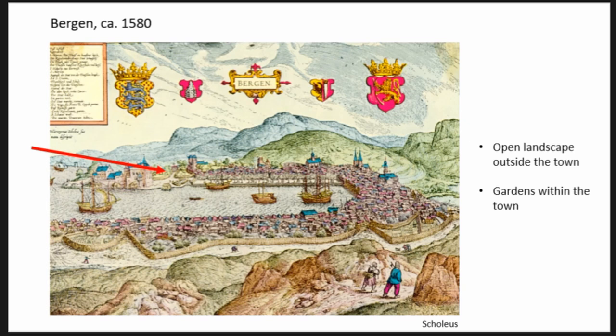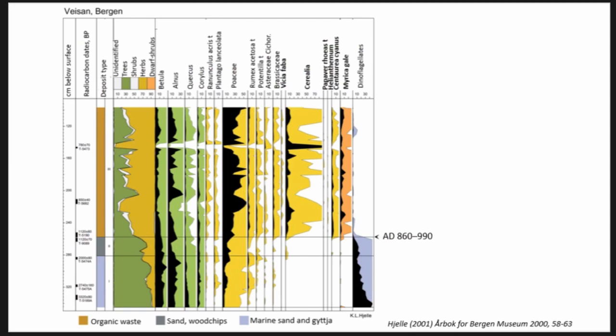The longest core we have is from what was earlier a marine basin in the northern part of the town, behind the harbor area. That shows three types of deposits: at the bottom we have marine sand and gyttja, then sand with a lot of wood chips, and on top of that we have typical organic waste from medieval towns — with a lot of mosses, wood chips, nutshells, and all this organic material. In the bottom layer the pollen composition shows grasses and Ranunculus, indicating grazing areas in the prehistoric time period.